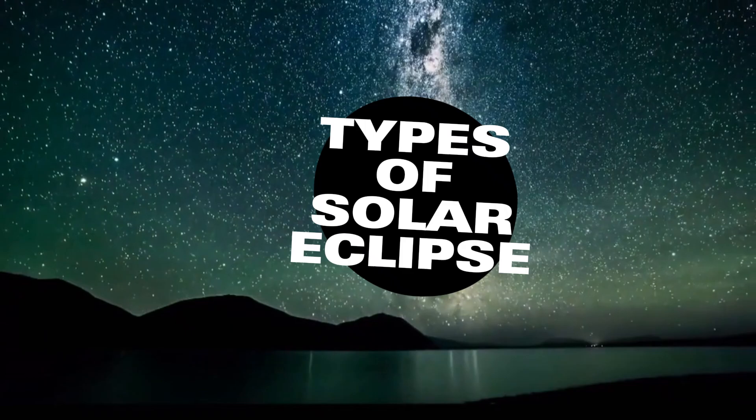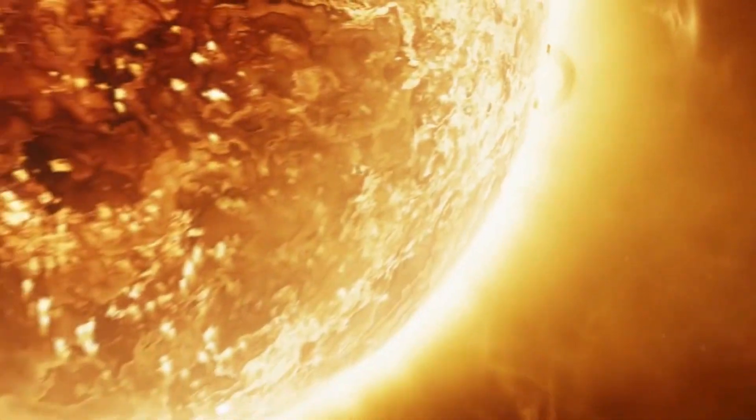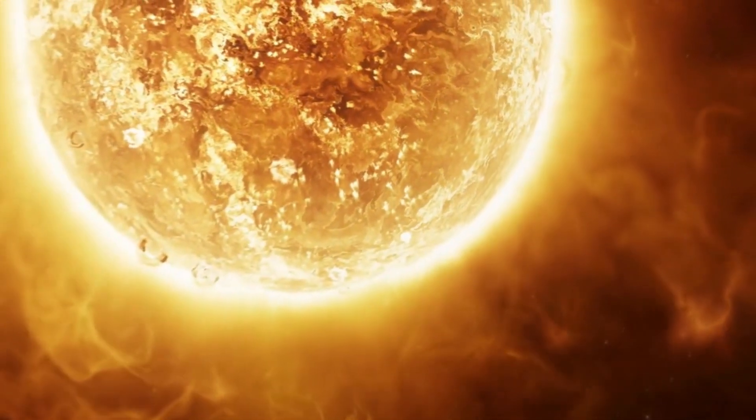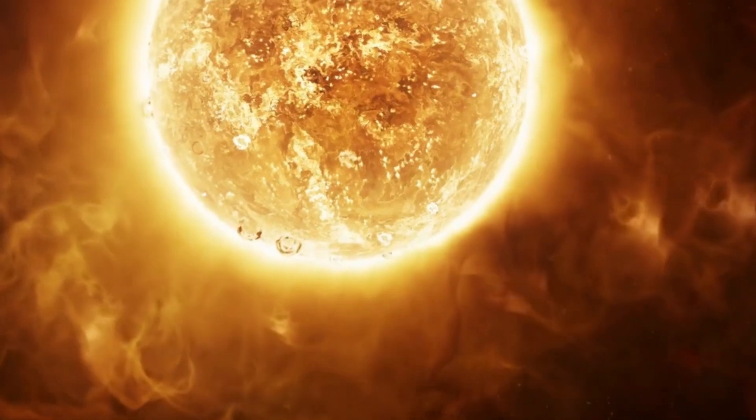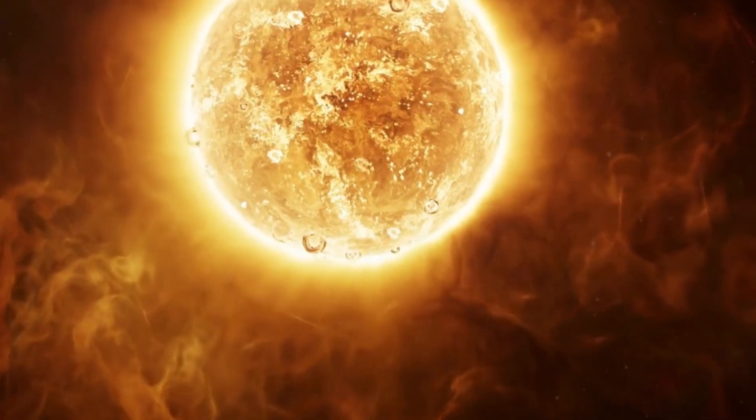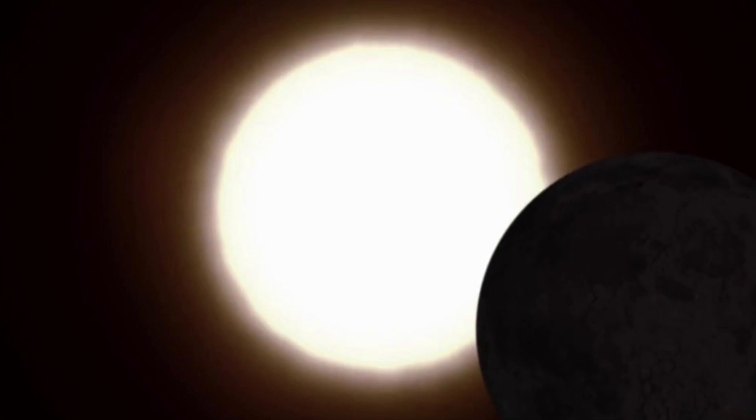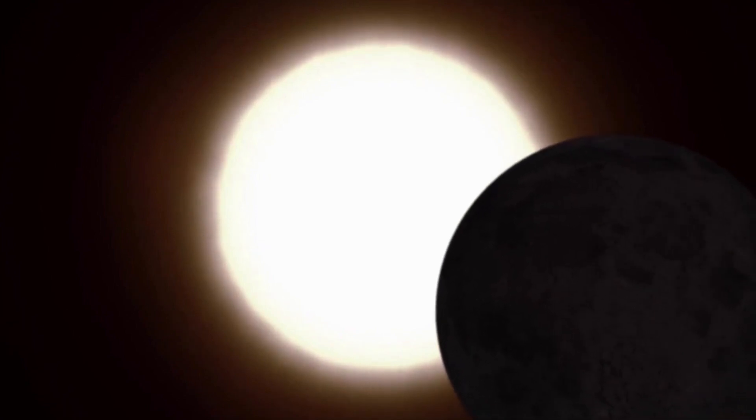Types of Solar Eclipses. Total Solar Eclipse. In a total solar eclipse, the moon completely covers the sun, plunging the surrounding area into darkness. Witnessing a total solar eclipse is a mesmerizing experience, as the sun's corona, its outer atmosphere, shines brightly against the darkened sky.